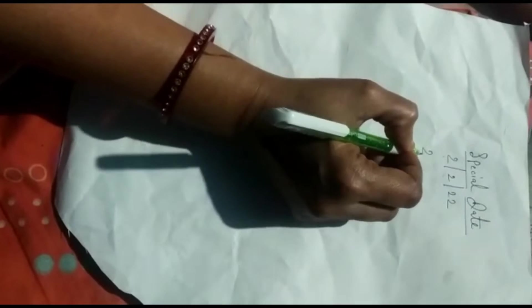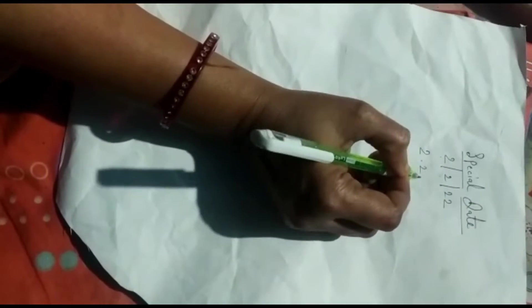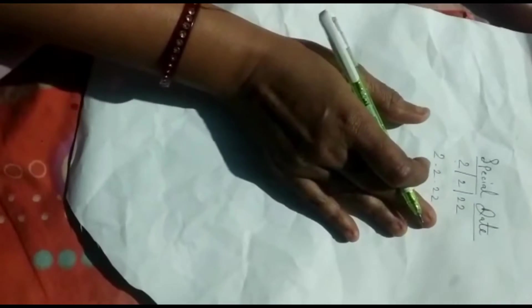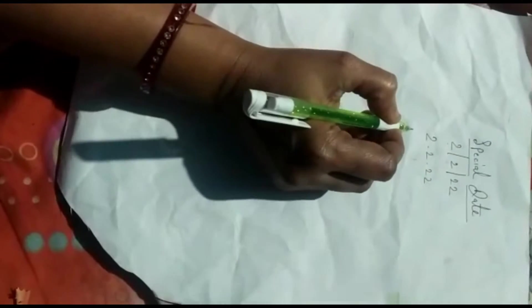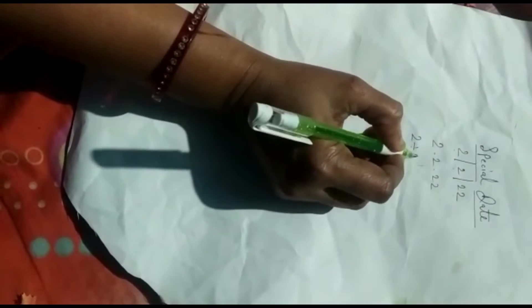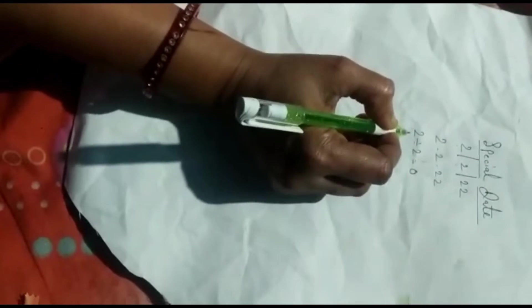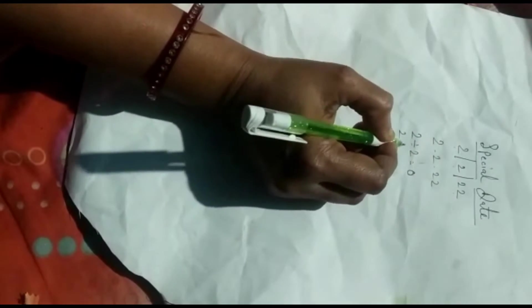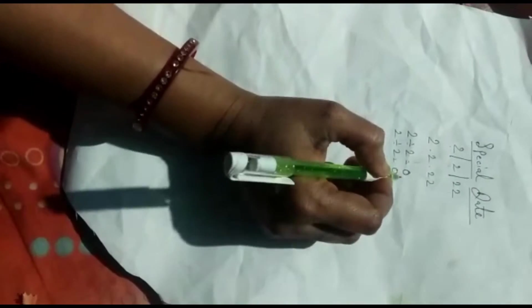If we will write this 3, plus or minus, then what are we seeing? In every situation, we have the same numbers. 2 divided by 2 is equal to 0. Then we will take 2 divided by 2 is equal to 0. This is 0.